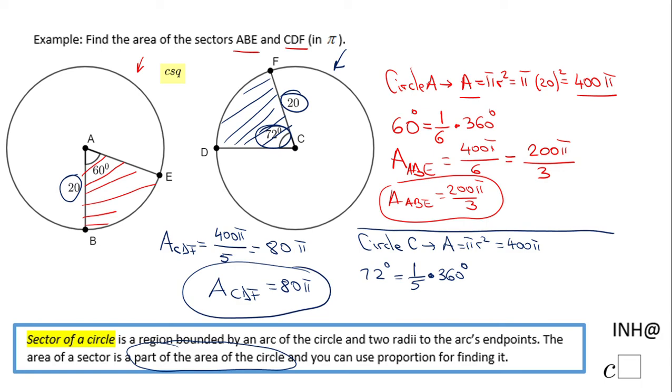So you notice if you have this type of angles that go evenly into 360, you can move faster and find the area of the sector. If the angles are not friendly, you have to use proportion. If you enjoyed this video, don't forget to click the like button and come back to C Square for more help. Thank you.